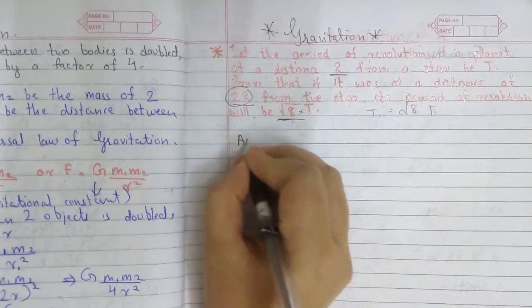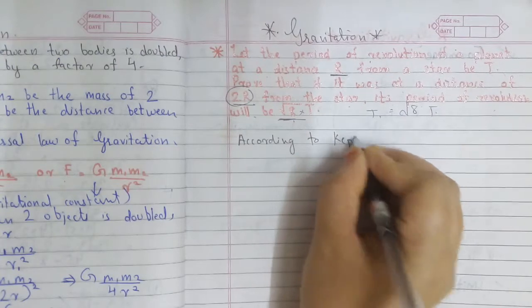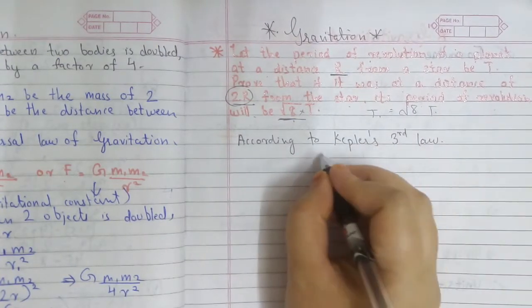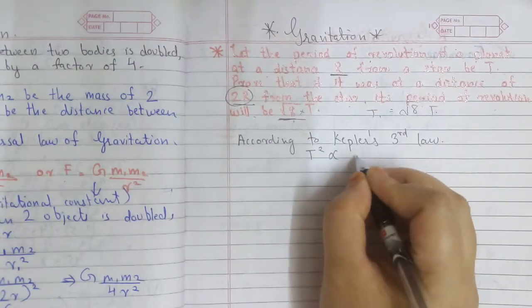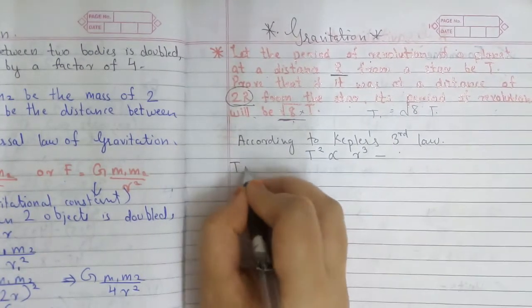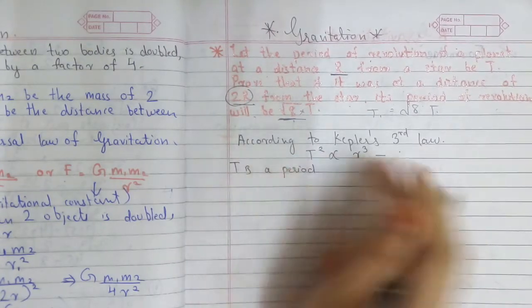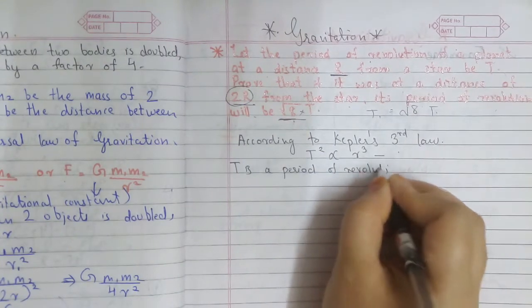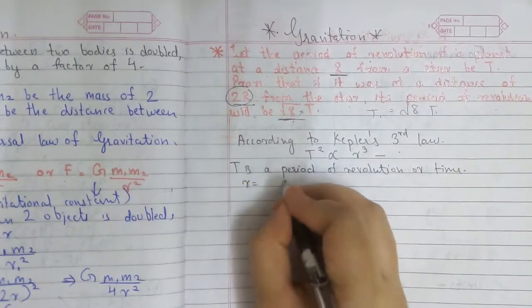According to Kepler's Third Law, T² is directly proportional to R³. Here, T is the period of revolution or time, and R is the distance.